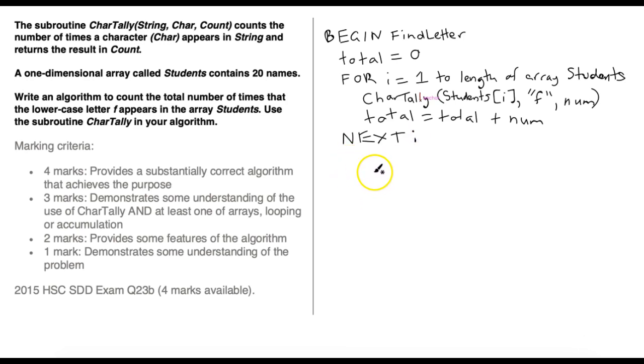And then at the end of this subroutine, we can print out the total number of times that that letter F occurred. So we can say print total, and then end the algorithm. And that's it. So here we have our completed algorithm. Now, there are other ways that we can write this. As I said, we could just in the for loop say for I equals one to 20, but the way that this algorithm is written will make it a little bit more reusable, easy to modify and maintain in the future. And it works correctly. Thanks for watching.